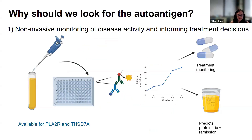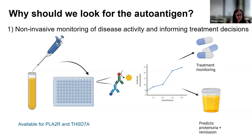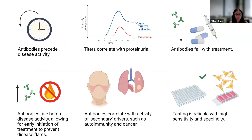There are multiple reasons to identify a target antigen. One of the most important is non-invasive monitoring of disease activity to help inform treatment, which is currently available for PLA2R and THSD7A. While not yet available for other antigens, serologic detection has been demonstrated among multiple newly identified membranous antigens and will likely become available in the future, though it will take time to characterize assay performance and collect specimens across multiple time points, especially for rare antigens.